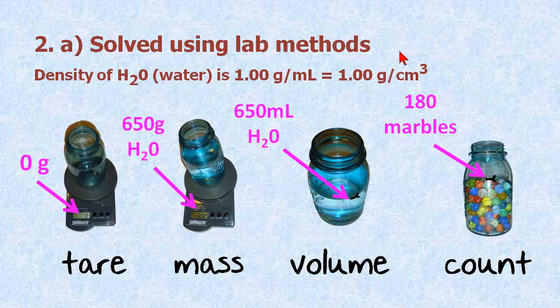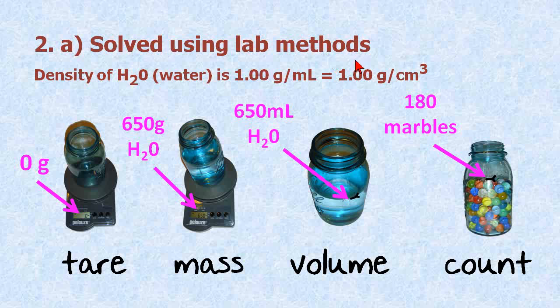I can solve this problem using lab methods, the same lab methods that you'll be using in this course. I know already that the density of water is 1 gram per milliliter. And if I simply take my scale that I weigh my coffee out in the morning, and I tare a mason jar on top of it, which means I zeroed it out, and I'm only weighing the contents in this jar. I put the jar on the scale, tare it.